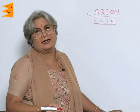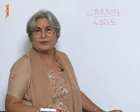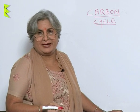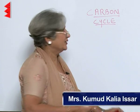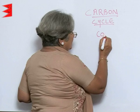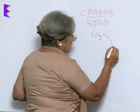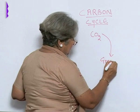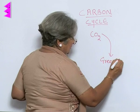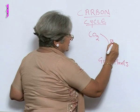The carbon cycle is fairly simple — it has only two main processes: photosynthesis and respiration. The carbon dioxide is utilized by green plants during photosynthesis.